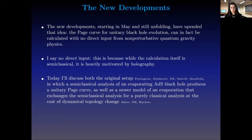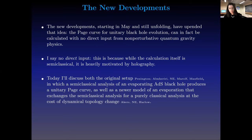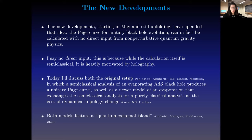Today I'll discuss both the original setup from the May papers — work by Pennington and by myself, Ahmed, Henry, and Don — where a semi-classical analysis of an evaporating black hole yields a unitary page curve. I'll also discuss a newer, purely classical model of black hole evaporation at the cost of dynamical topology change. There is also the AMMZ model, on which I'll comment. Both feature something called the quantum extremal island.